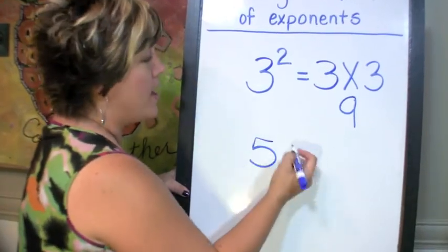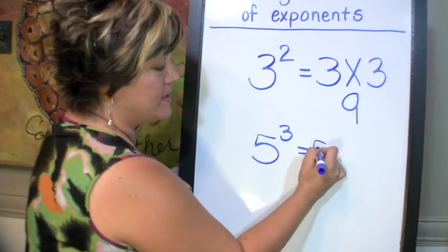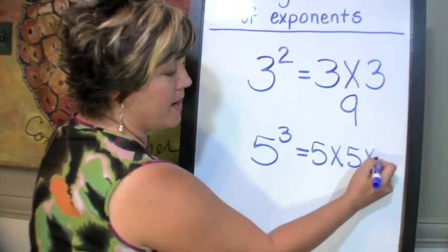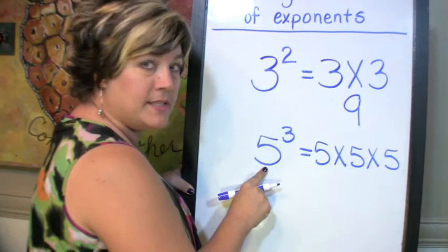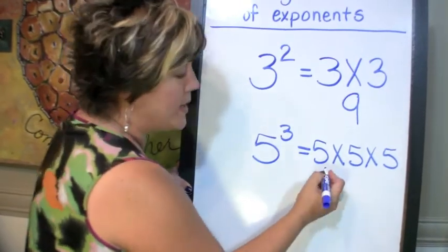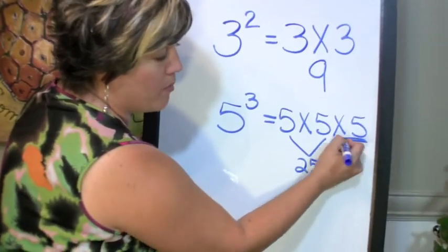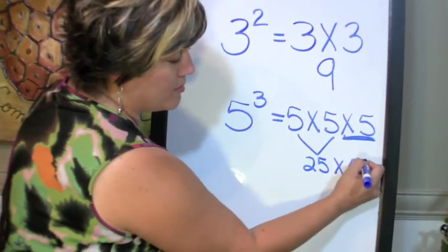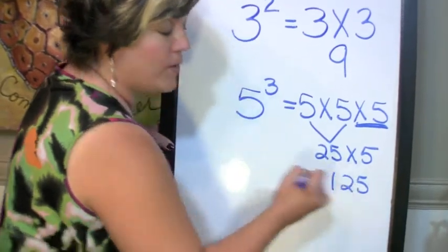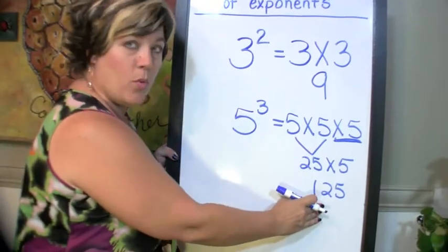For one more example, if I had 5 to the power of 3, you might say that this is 5 times 5 times 5. My base is 5, and I multiply it times itself 3 times. So when I solve that, the first part is 25, and I still have one more to multiply it by, and I end up with a value of 125. So 5 to the third power equals 125.